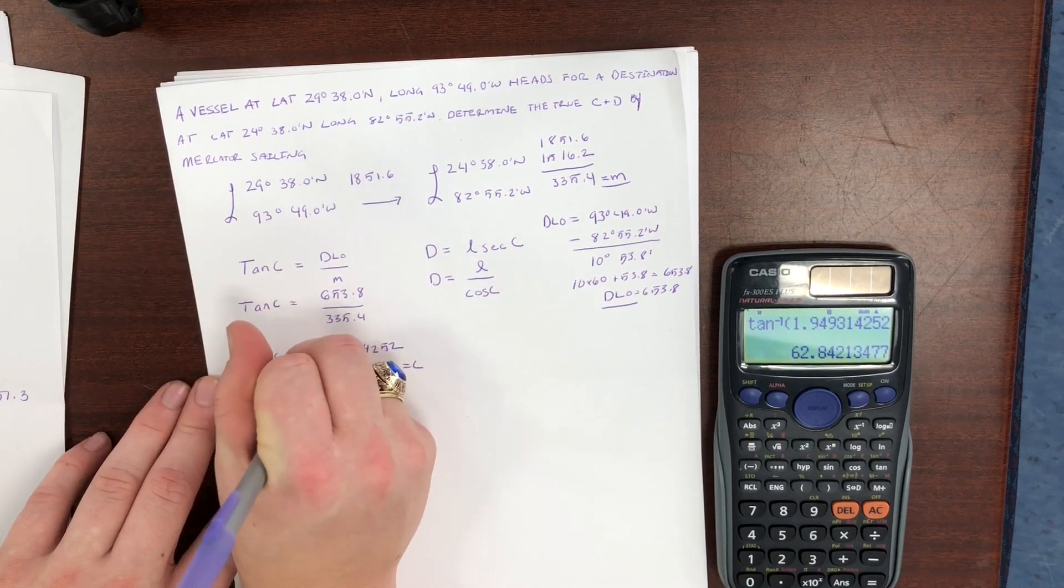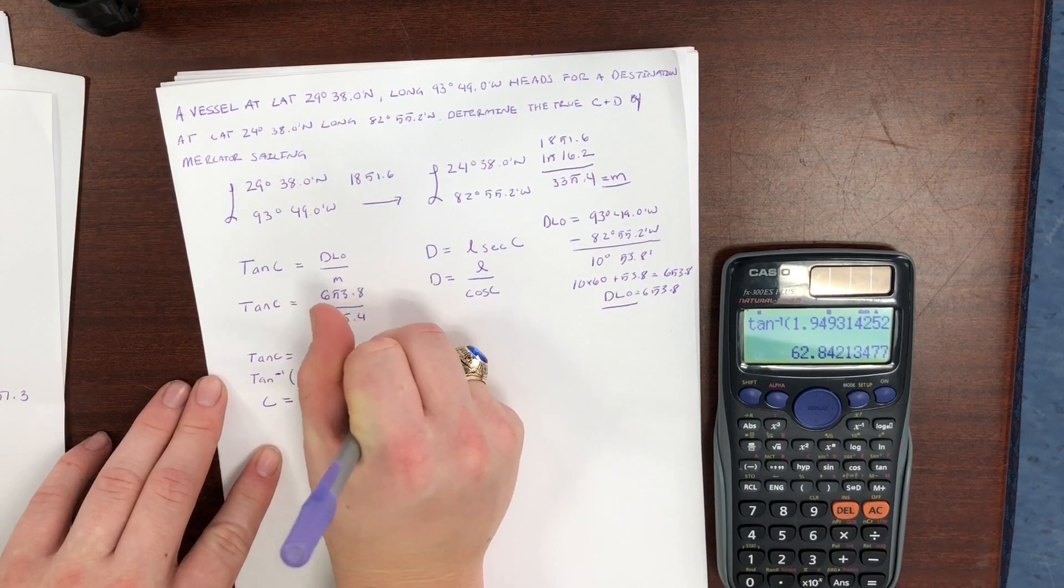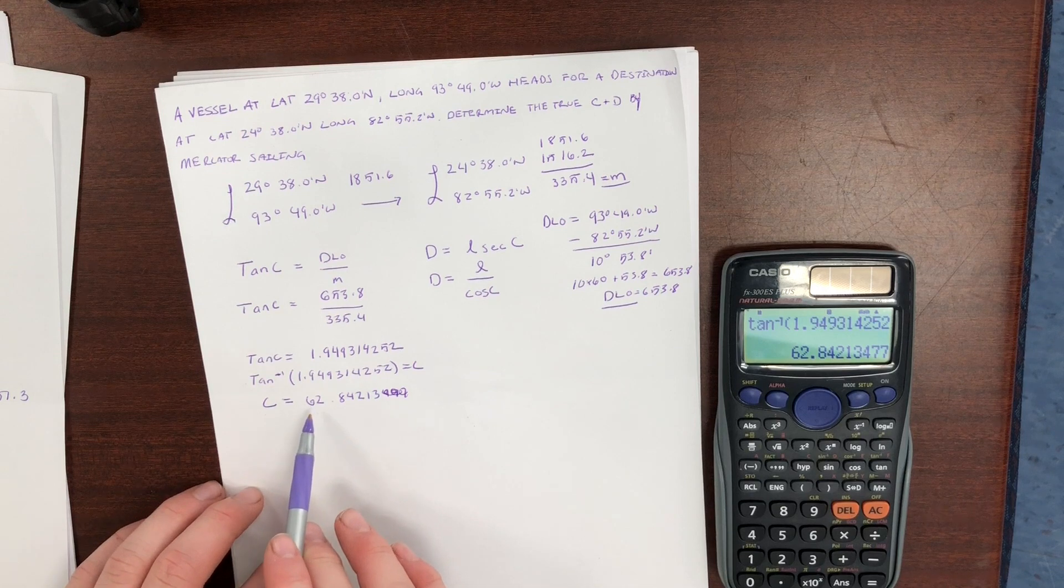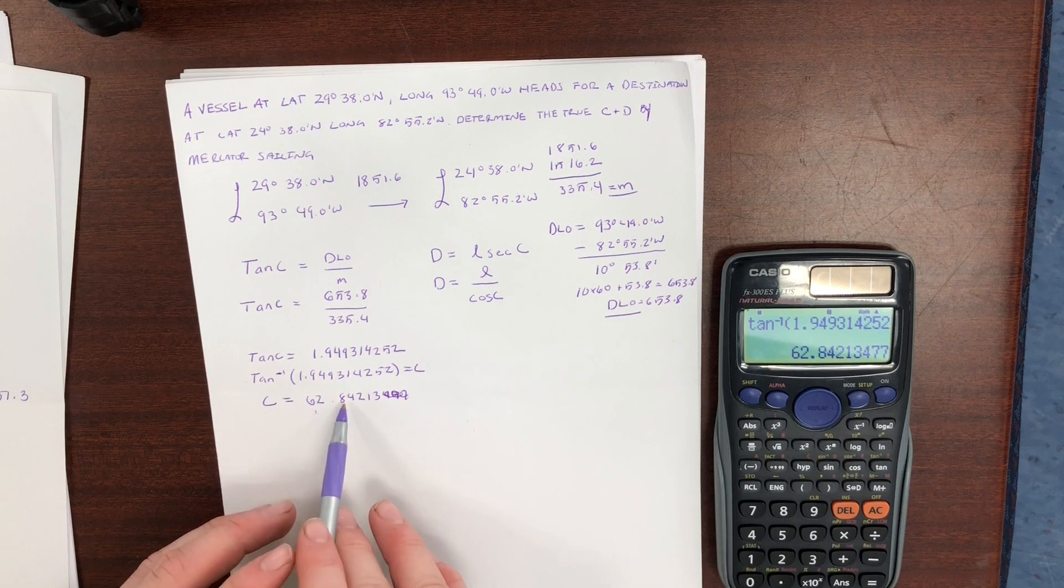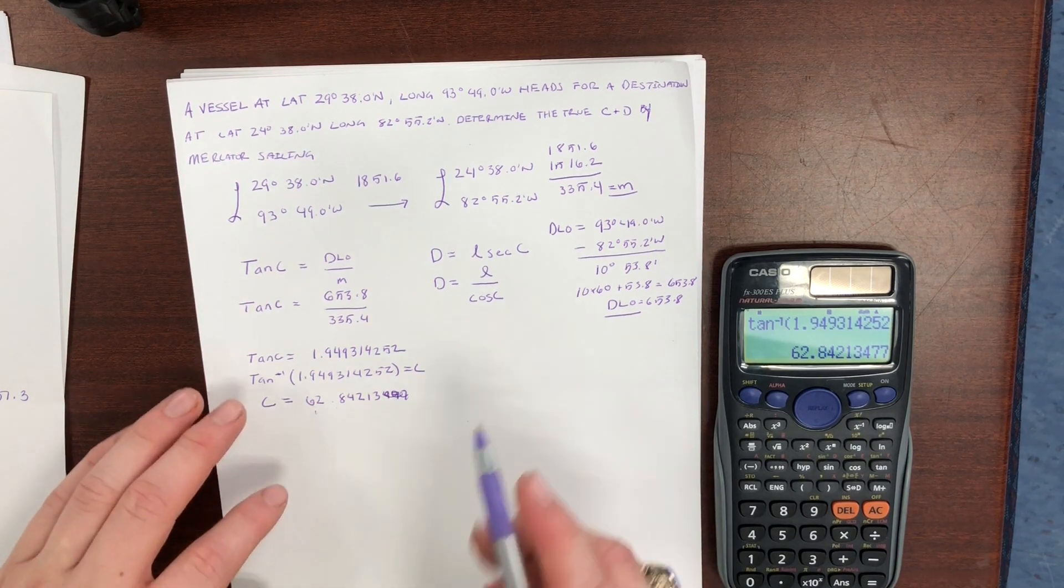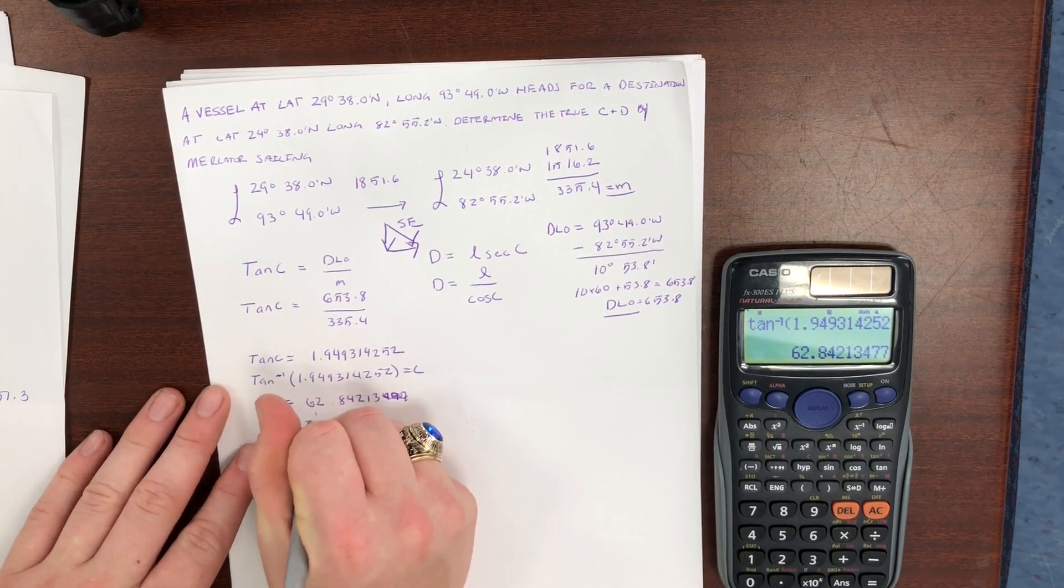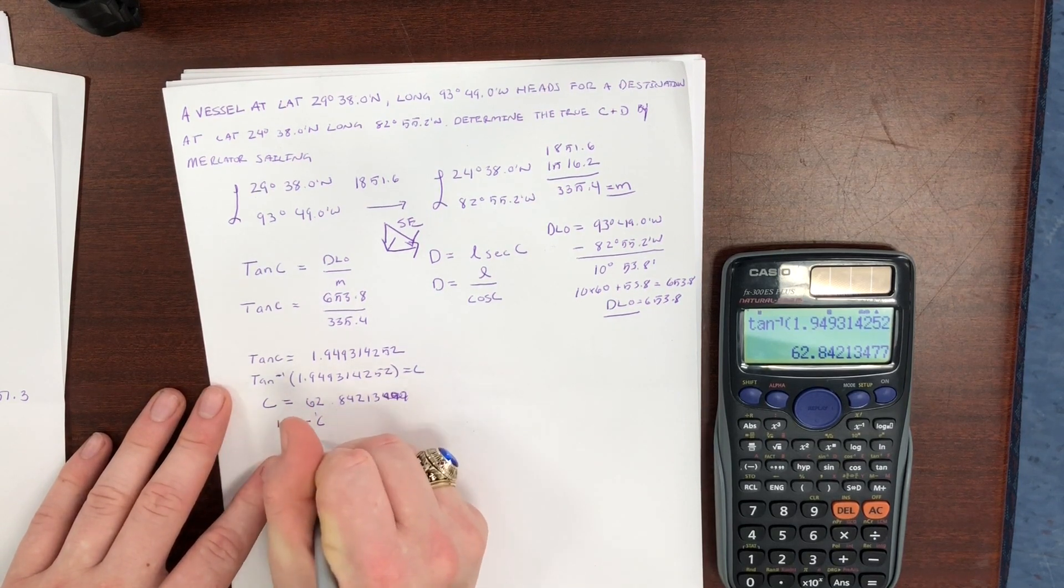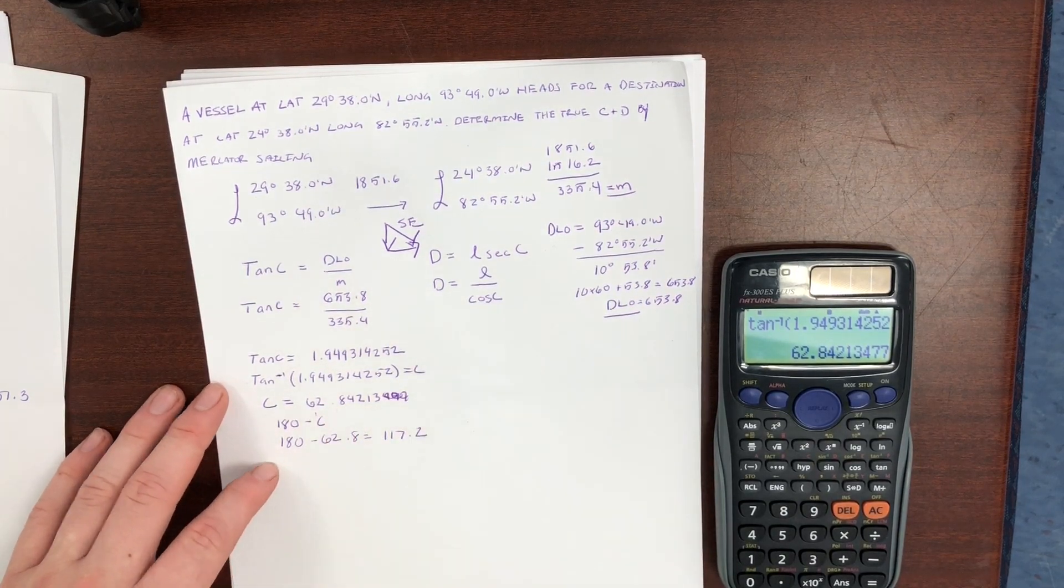Inverse of tan will give us our answer of the course, and we get C to be 62.84213. So next with the course, we have to apply our correction. If we're traveling northeast, we would be traveling at 62.8 degrees true as our course. But since we're traveling southeast, we do 180 minus C. And in this case, 180 minus 62.8 is equal to 117.2 degrees true.